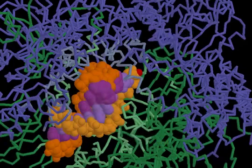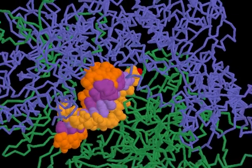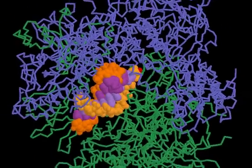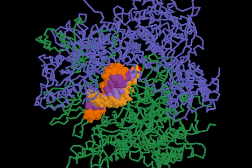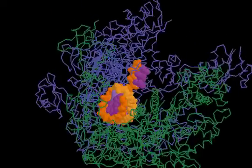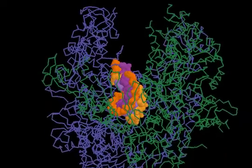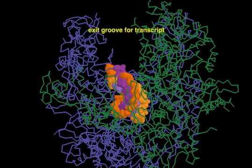In the active site of RNA polymerase II, a single-stranded DNA template is transcribed into a complementary RNA transcript. The initial product is a DNA-RNA hybrid from which the newly synthesized RNA strand is stripped off. It leaves the polymerase via an exit groove on the protein surface.